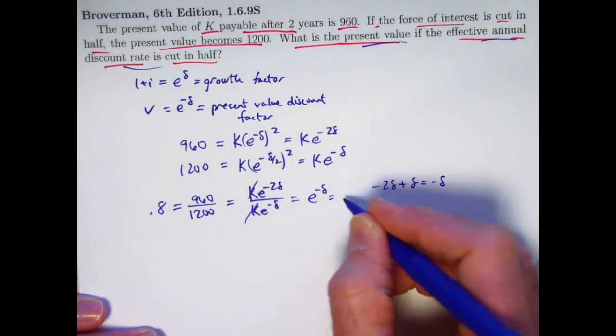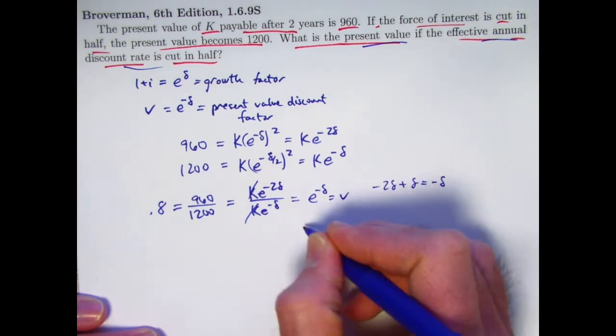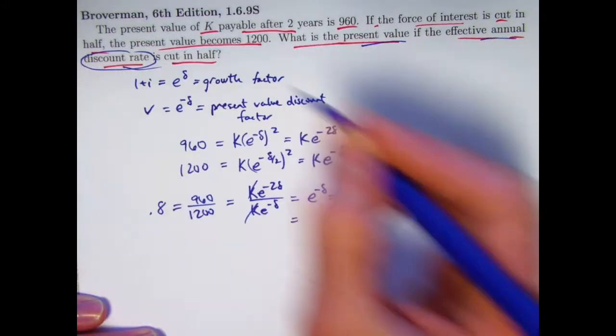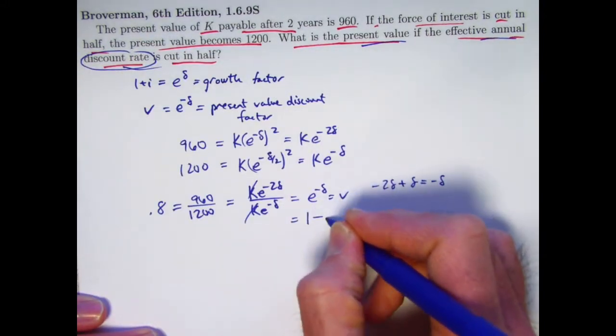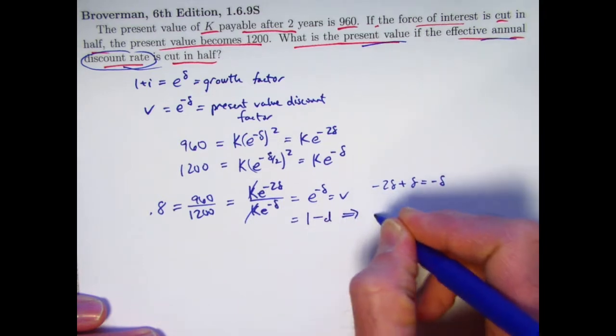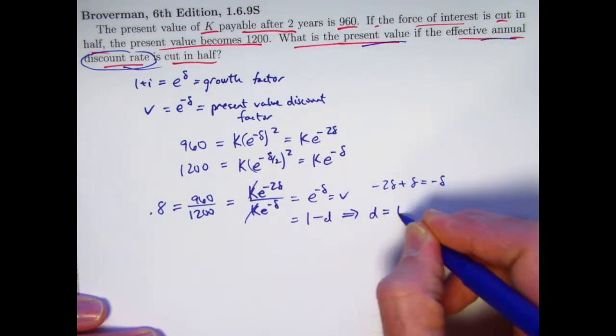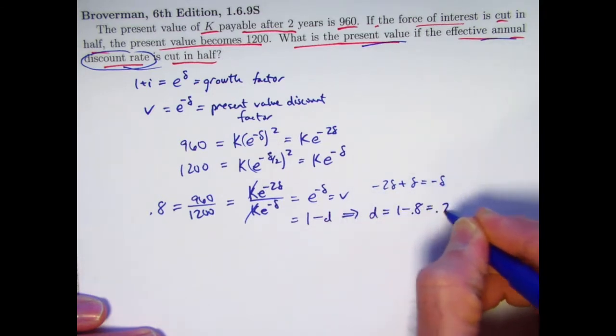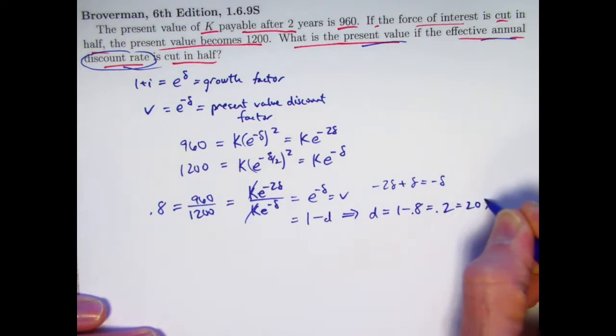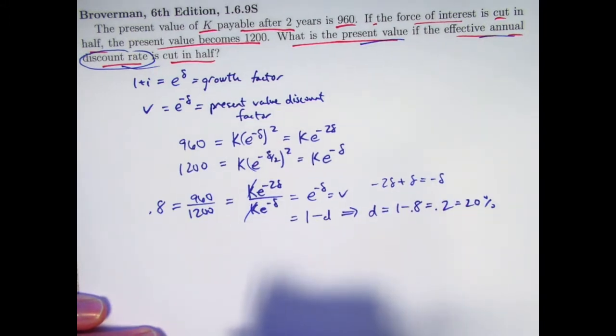This is the same thing as V, the discount factor, which is related to the discount rate, D, as 1 minus D. So the discount rate here is 1 minus 0.8 is 0.2, or 20%. We're going to cut that in half to 10% in a minute here, but let's also find K.